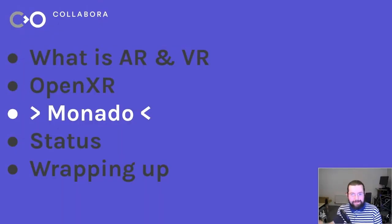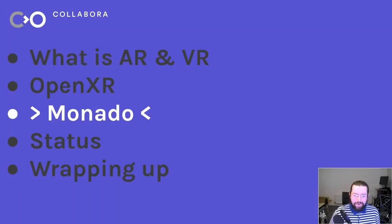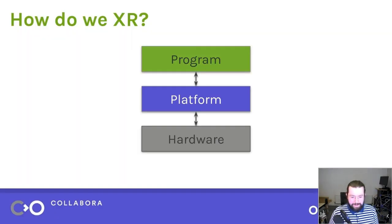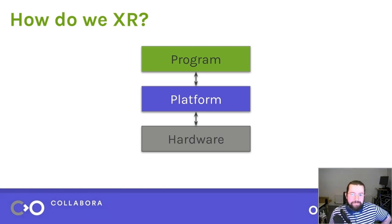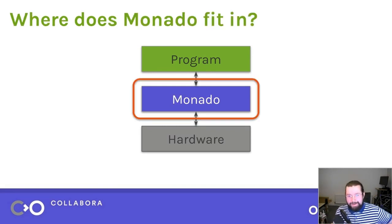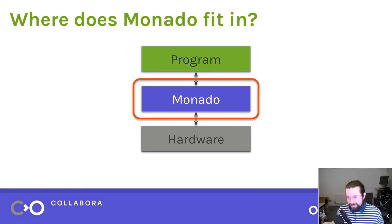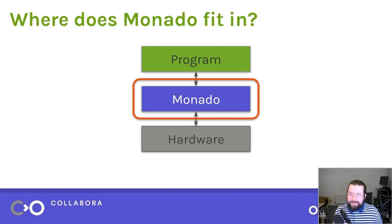I'm going to talk about Monado, which is the FOSS implementation part of OpenXR. So going back — how do we do XR? You have your program, you have a platform, you have your hardware — and Monado is a platform. It's a collection of drivers and software that allows you to run an XR application on your computer or on specific hardware.